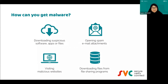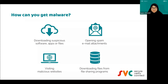Another common way is downloading files from file-sharing programs. You're probably familiar with torrent — back in the day people used LimeWire to download music; these days the most popular is torrent, where people download movies or K-dramas. The thing about file-sharing programs is that you might think it's a movie, but when you click it, apparently it's malware. That's how you can get bad software.